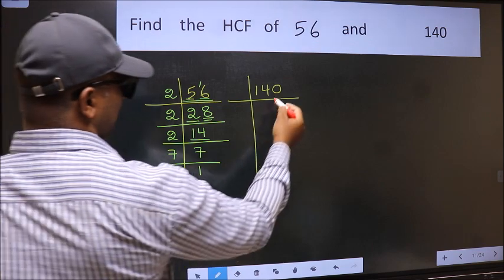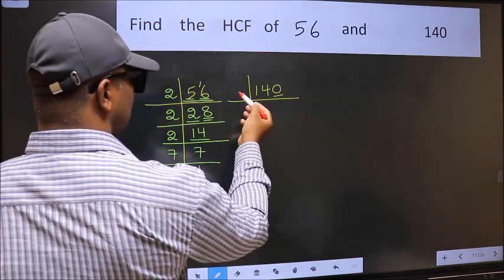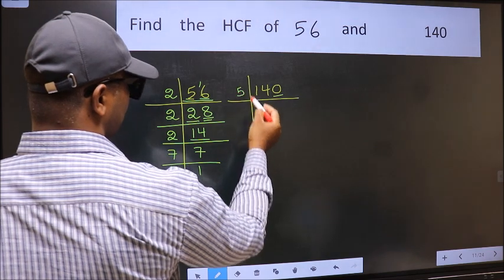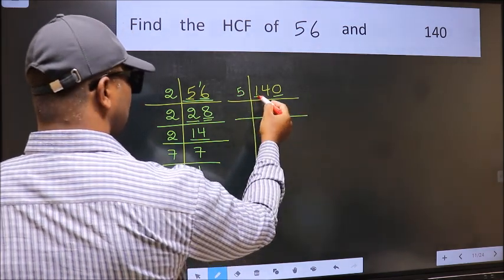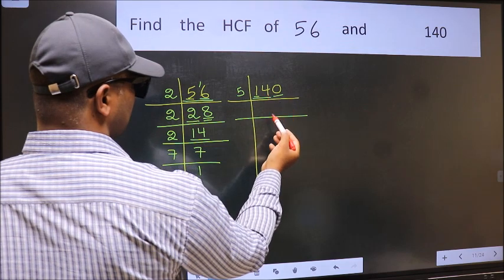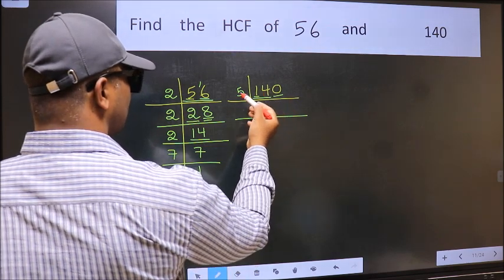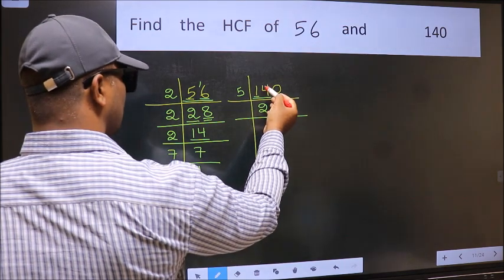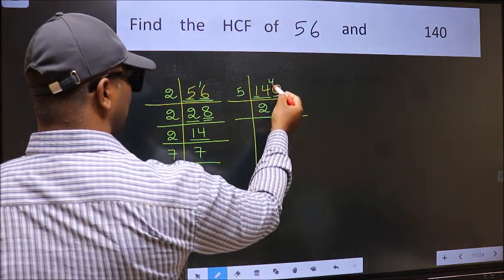Now the other number. Last digit 0, so we can take 2 or 5, but I prefer 5. First number 1 is smaller than 5, so take 2 numbers, 14. A number close to 14 in the 5 table is 5 times 2, which is 10. 14 minus 10 is 4. 4 carried forward makes 40.